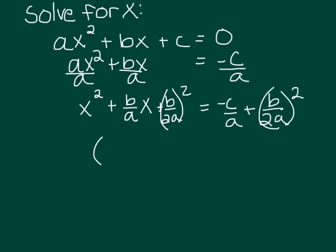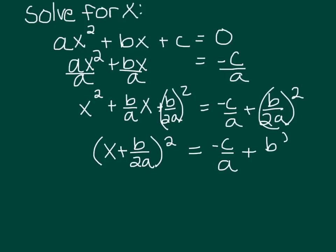On the left we can factor that to (x + b/2a) all squared. And on the right we can simplify a little bit. This is going to be negative c over a plus b² over 4a². And in order to add my fractions I need a common denominator, so if I'm going to square this a I need an a up here, and if I want a 4 down here I need a 4 up here.